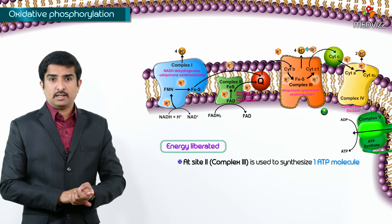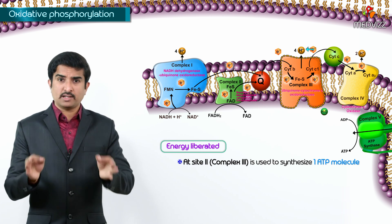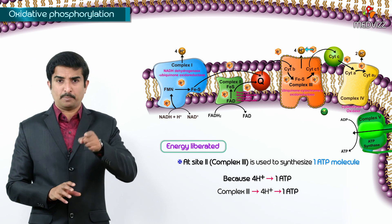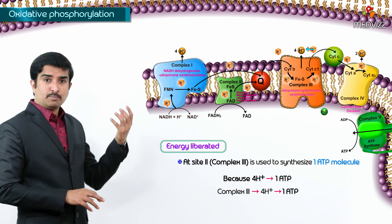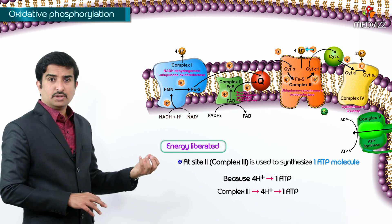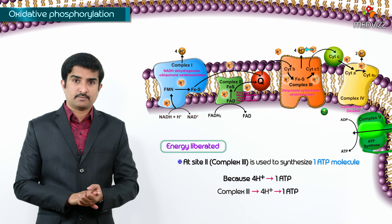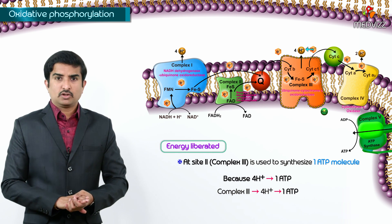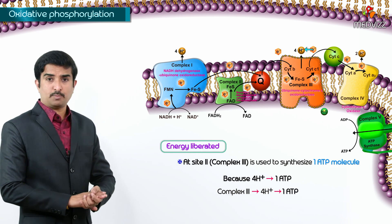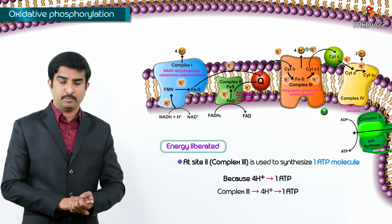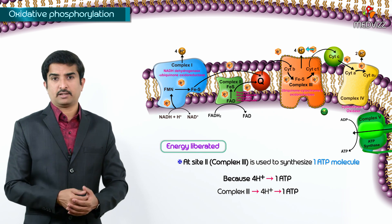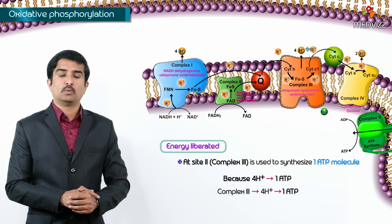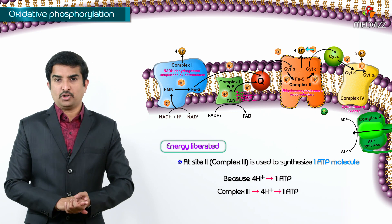At site 2, energy is also used to synthesize one ATP molecule, because the four hydrogen ions pumped into the intermembrane space at complex 1 and complex 3 are pumped back into the mitochondrial matrix by the concentration gradient, producing ATP molecules. Whenever four hydrogen protons are pumped back into the mitochondrial matrix due to their electrochemical gradient, one ATP molecule is produced. That is why complex 1 produces one ATP molecule and complex 3 also produces one ATP molecule.